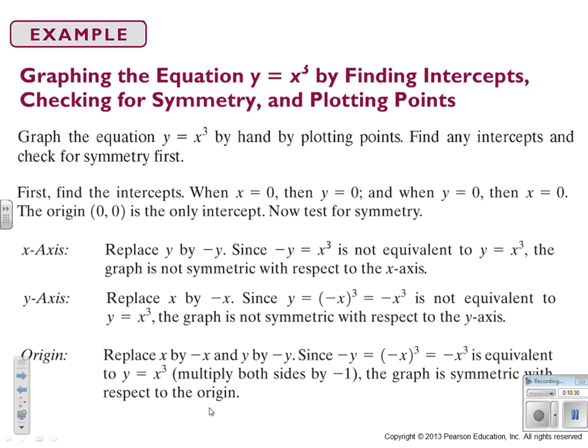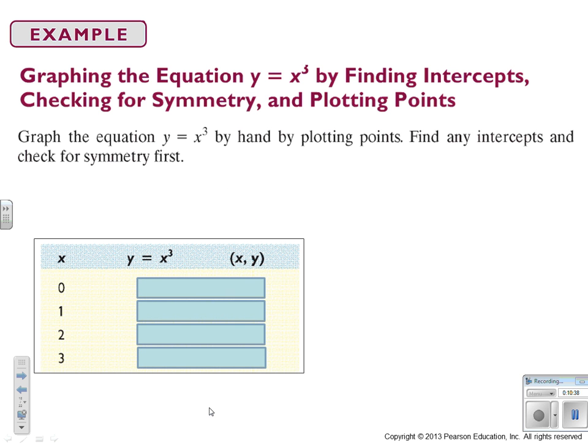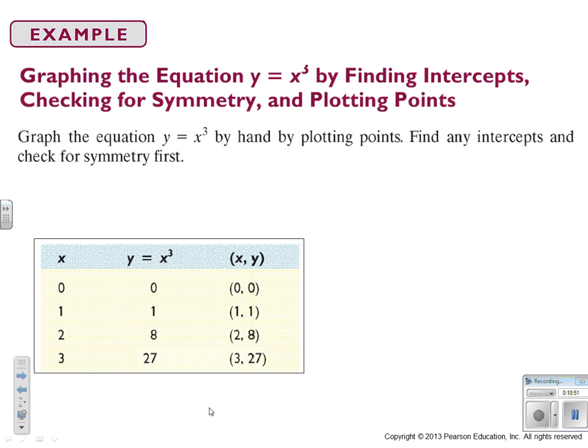By the way, I call y equals x to the third—it's a cubic function, but I call it the swimmer. Don't judge. So we're going to plot some points. We're going to plug 0, 1, 2, and 3 in. When I plug in 0, I get 0. When I plug in 1, 1 cubed is 1, 2 cubed is 8, 3 cubed is 27. It gets big really fast. The reason it's called the swimmer is if you're diving into the water, this is like your body, this is your arms, and these are your legs, and you're diving.